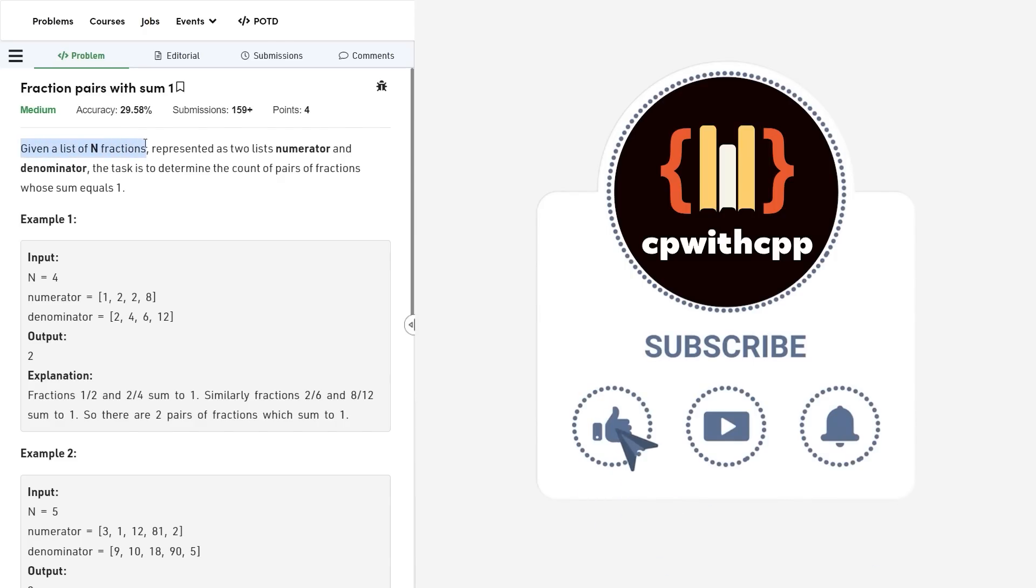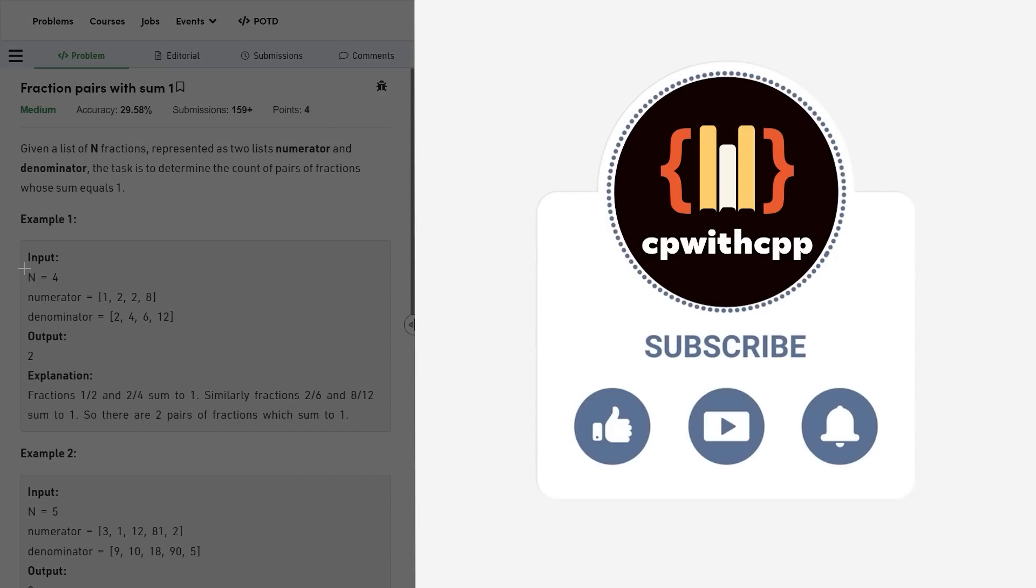The problem statement says that we have been given a list of n fractions represented as two lists numerator and denominator. Now our task is to determine the number of pairs of fractions whose sum is equal to 1.